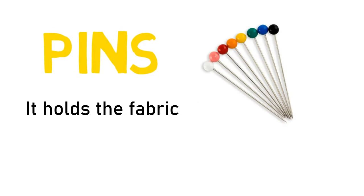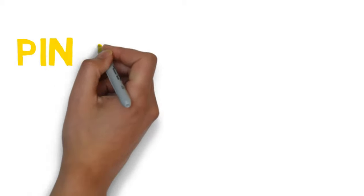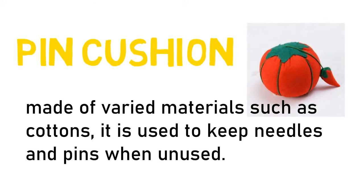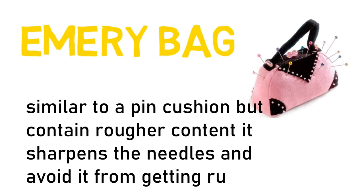Pins. They hold the fabric pieces together. Pin cushion. Made of varied materials such as cotton. It is used to keep needles and pins when unused. Emery bag. Similar to a pin cushion but it contains rougher contents. It sharpens the needles and prevents them from getting rust.